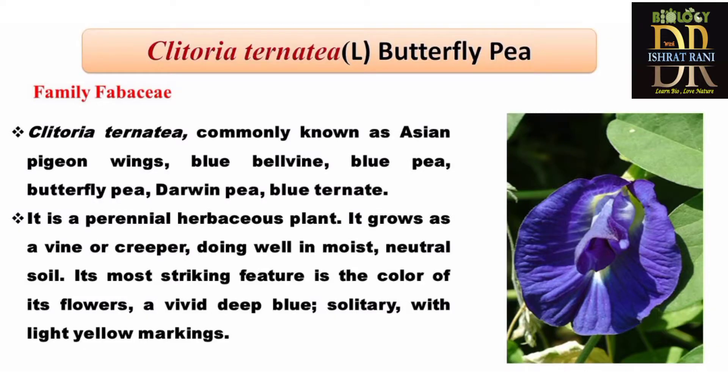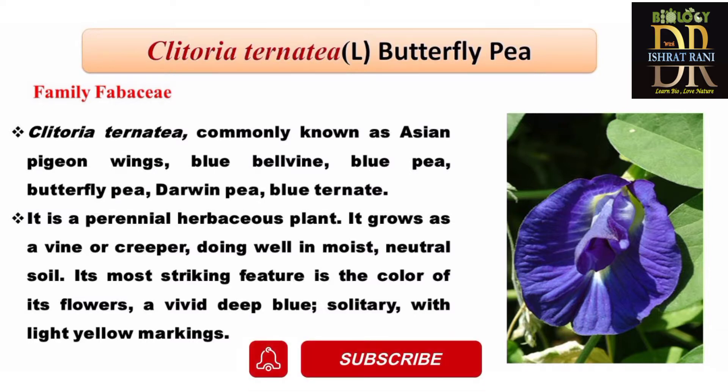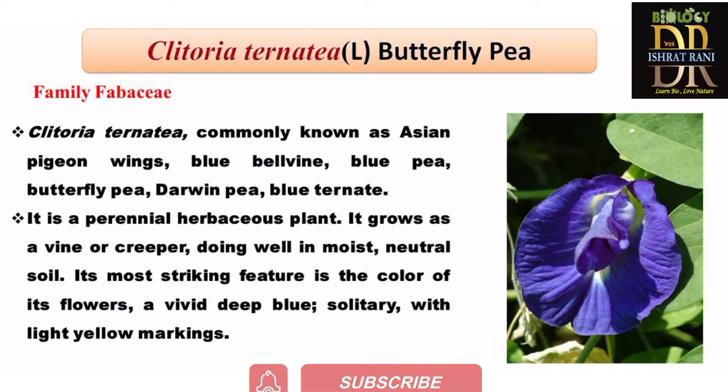Clitoria ternatea is commonly known as Asian pigeon wing, blue belvine, blue pea, butterfly pea, Darwin pea, or blue ternatea.